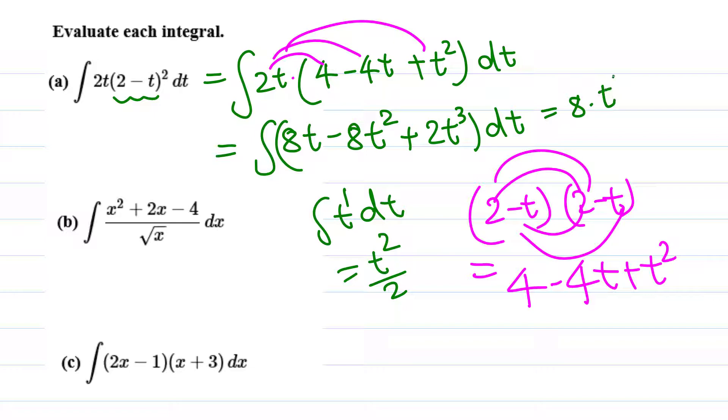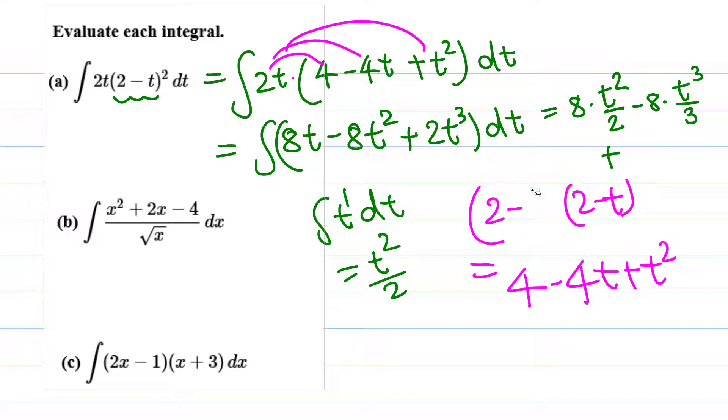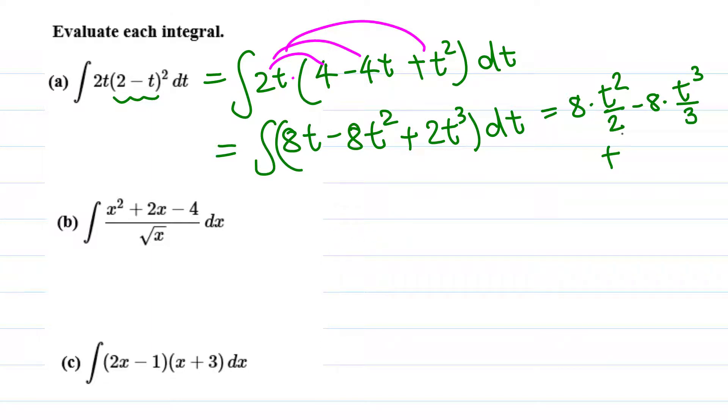So this is 8 times t² over 2, minus 8 times t² means t³ over 3, plus 2t³ means t raised to 4 over 4, plus C.